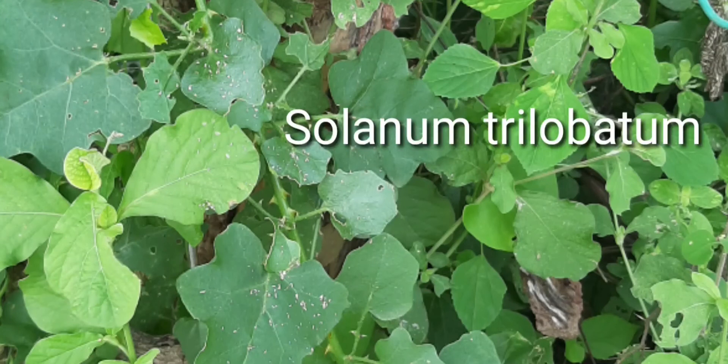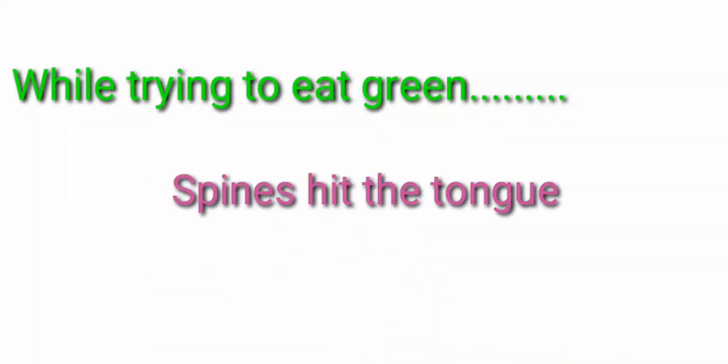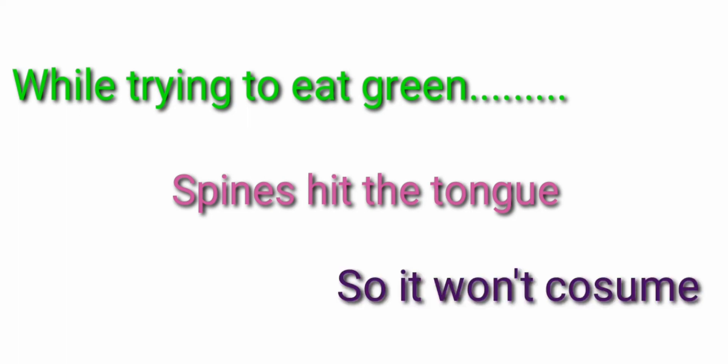The plant like Solanum trilobatum has the spines. When the animal tries to eat the greens, the spine hits the tongue, so automatically it will not consume. Even if it can try to consume, it can only consume the leaves where the part found without the spines. Then it has to leave out the stem region.